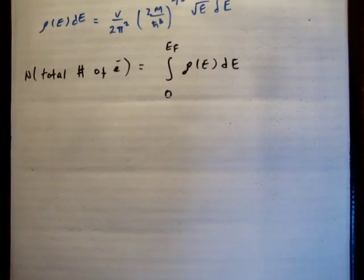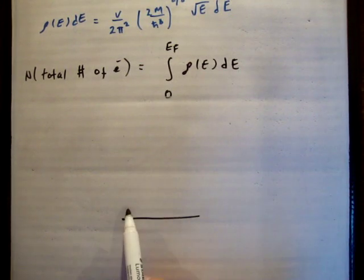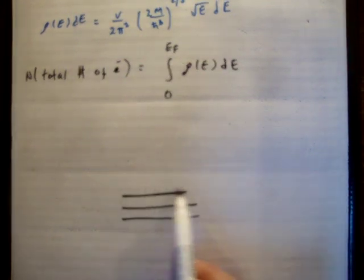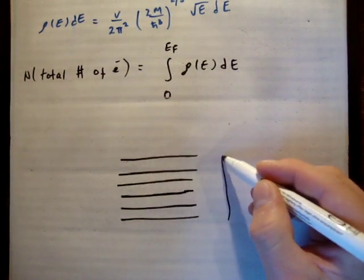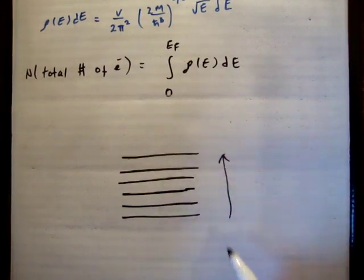You can ignore what I've written up here. If you can imagine the states of electrons in a solid as increasing in energy like this, so energy is going upwards like this, these are all the states, and we'll say this is the zeroth state.